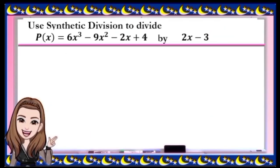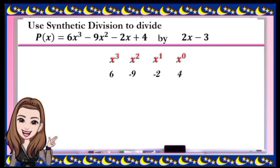You try this. Use synthetic division to divide p(x) = 6x³ - 9x² - 2x + 4 by 2x - 3. Pause the video and try to answer, then play again to check your answer. Our dividend is in the third degree, so the numerical coefficients are 6, negative 9, negative 2, and 4. The divisor is 2x - 3, so a is 2 and b is negative 3; change the sign, that gives positive 3. Write 2 on the left side and positive 3 on the right side.